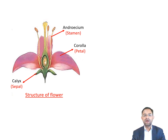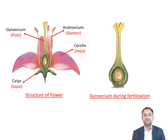The third whorl of the flower is the androecium and it represents the male reproductive structures. Androecium is composed of stamens, which are male reproductive organs. Gynoecium is the fourth whorl of the flower and represents the female reproductive structure. Each unit of the gynoecium is known as a pistil, and each pistil has three parts: stigma, style, and ovary.